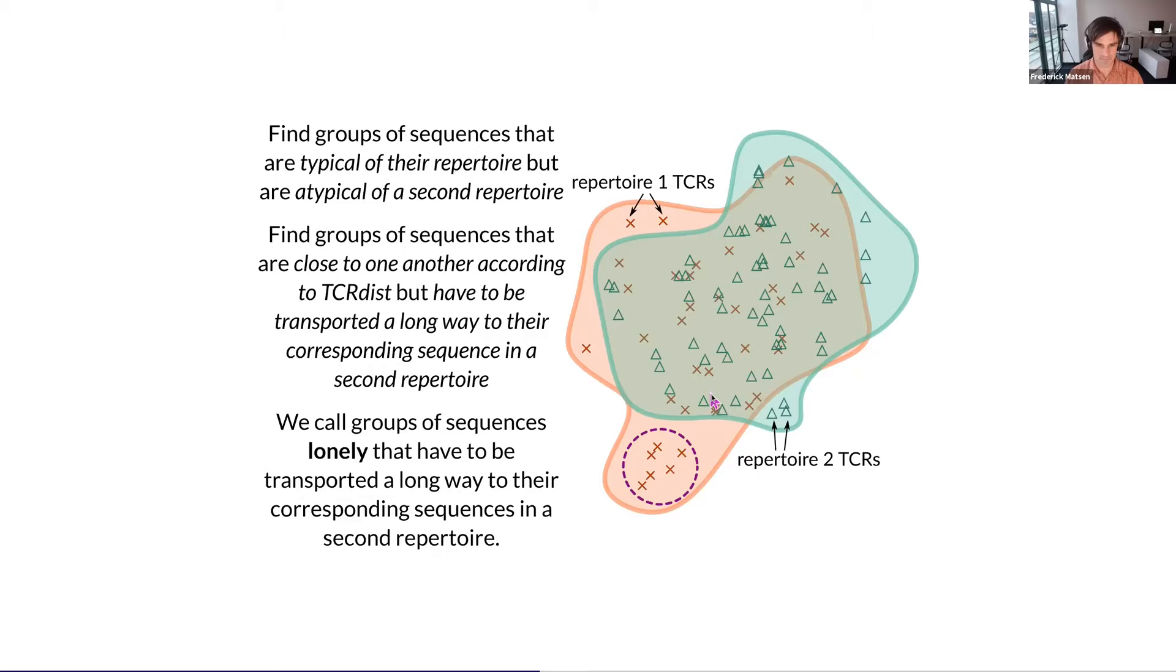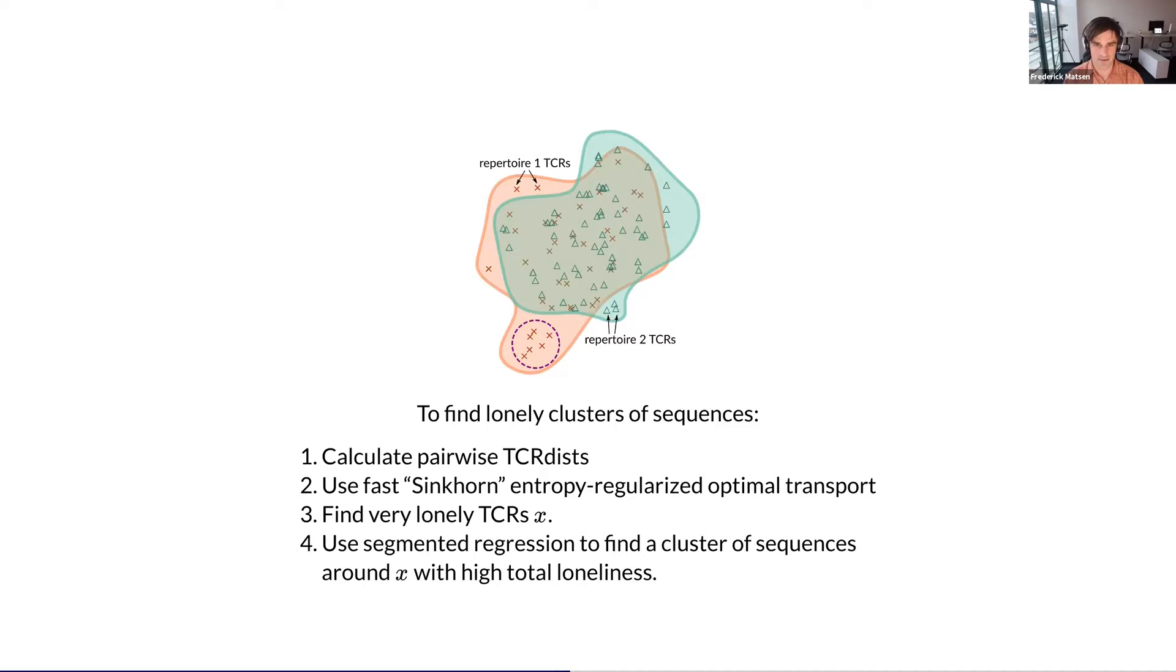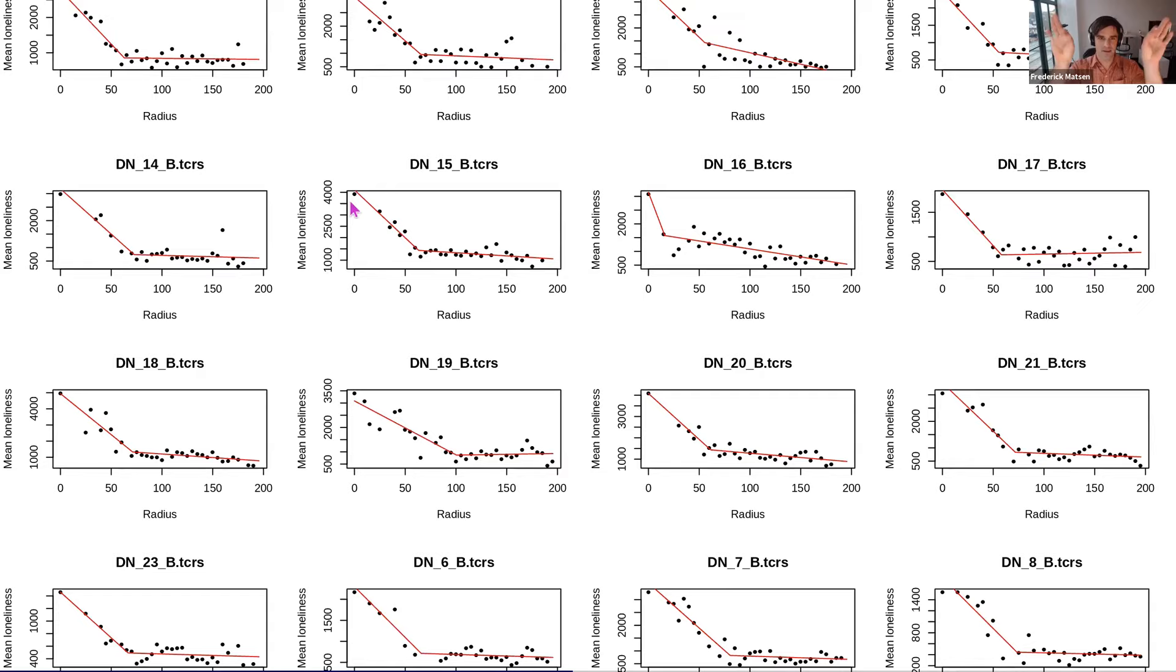In a little bit more detail, our pipeline looks like this. You start by calculating pairwise TCR dists. We use this fast Sinkhorn entropy regularized optimal transport. That's a really important detail, but it is a detail nonetheless. We find very lonely TCRs. I emphasize that these are TCRs that are lonely with respect to a second repertoire. There might be a cluster of lonely sequences. Then we use segmented regression to find a cluster of sequences around X with high total loneliness. What we're doing here is we're looking at annuli, rings of increasing radius, and we're looking at the mean loneliness for each of these annuli. As we increase the radius, we see how that mean loneliness goes down, and then at some point it hits a break point, and then we can identify that with something called segmented regression.